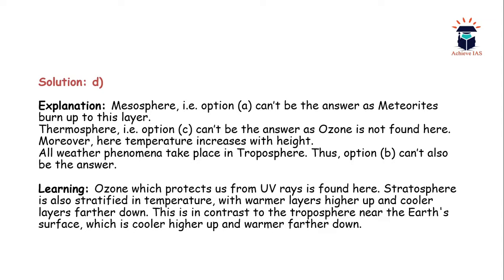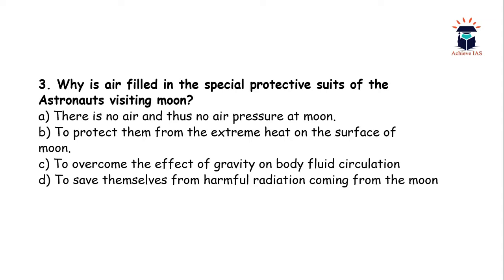The answer is D — stratosphere — because there is not much disturbance in this layer, making it ideal for flying aeroplanes. It also contains the ozone layer which protects us from harmful UV radiations of the sun. Stratosphere is stratified in temperature with warmer layers higher up and cooler air further down, in contrast to the troposphere near the earth's surface.